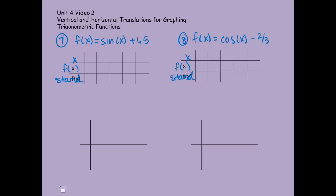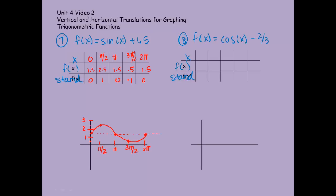Check back with me in a second. So here is my chart for the sine of x plus 1 and a half — I've changed all of my y values and I'm going to plot these points on my graph. And there is the result of moving the sine graph up 1 and a half. For the cosine, we moved down 2 thirds, so the shift went down 2 thirds. There is my table of values, and there is my cosine graph moved down 2 thirds.